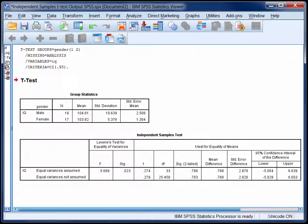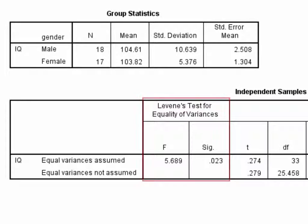The second table actually contains two separate tests. The first test is Levene's test for equality of variances. The null hypothesis for this test is that the two group variances are homogenous, or the same — in other words, it's a test of the homogeneity of variances assumption. When Levene's test is significant, as it is here with a significance level of less than 0.05, the homogeneity of variances assumption has been violated.